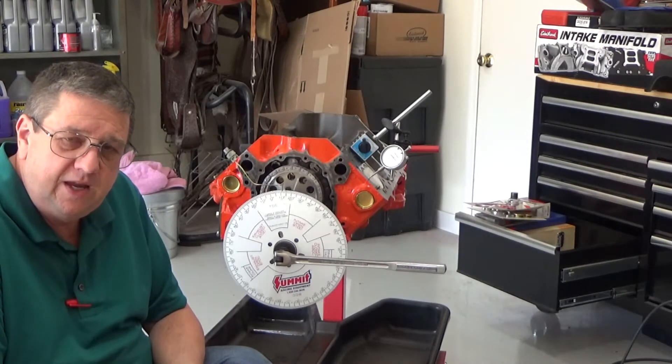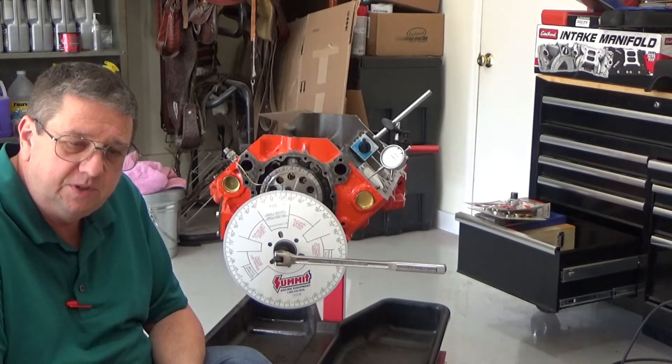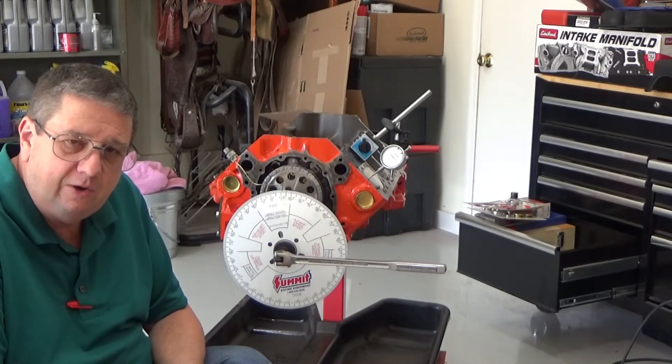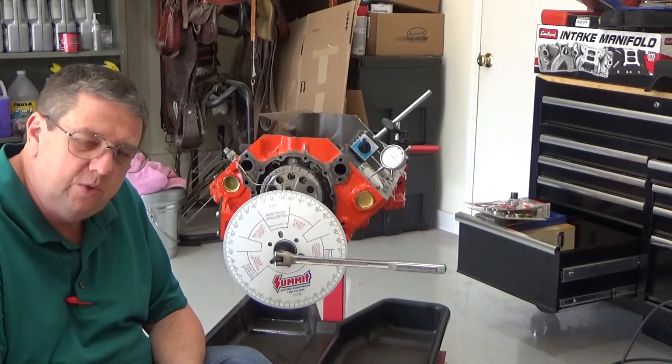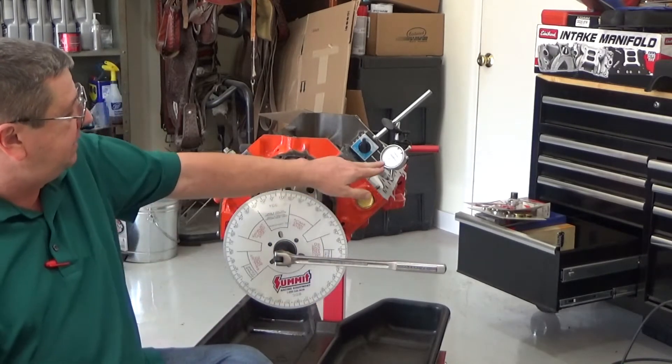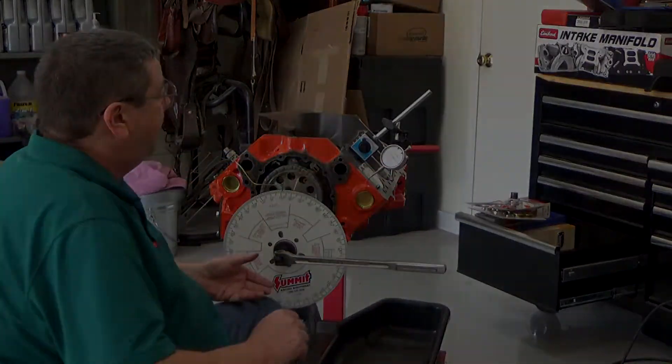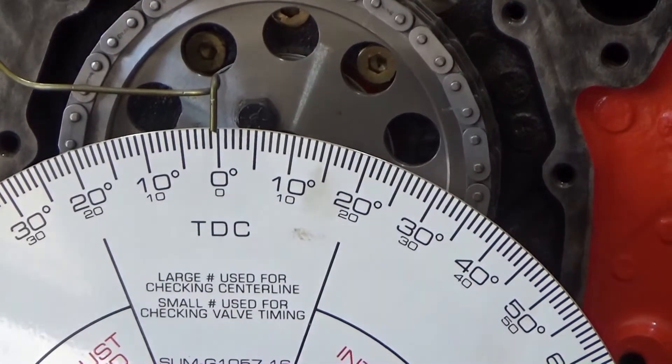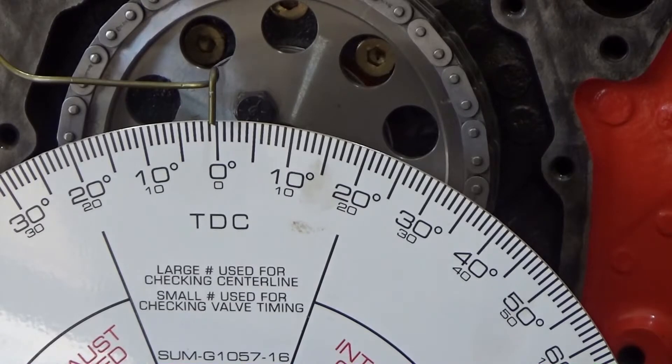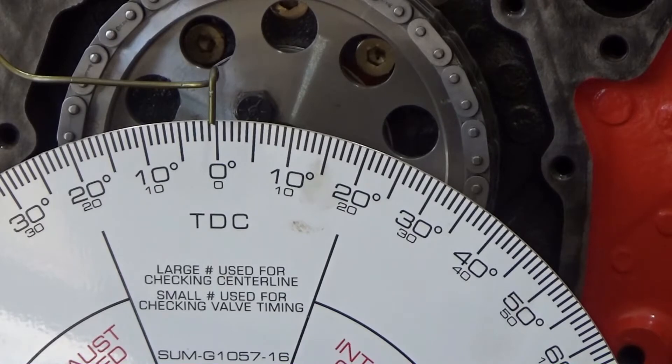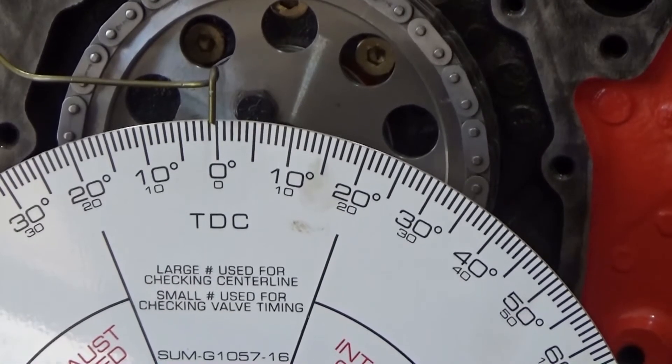I'm getting ready to degree the cam here. I've already determined my top dead center and I'll show you how I went about that. I've got the balancer on, I've got the degree wheel on, and I've got my dial indicator set up here. I made a little makeshift pointer out of a coat hanger using a head bolt to wrap it around, and hopefully you can see that that pointer is on zero top dead center.